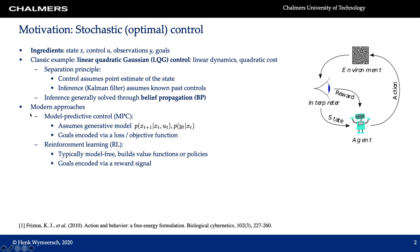In addition to this classic example there exist more modern approaches such as model predictive control and reinforcement learning. In model predictive control we assume to have knowledge of a generative model of the agent dynamics as well as the observation model. The goals are encoded with a loss or objective function, and based on this the model predictive controller solves an optimization problem to determine the current control action. On the other hand, reinforcement learning is typically model-free — it does not have a generative model and it builds value functions or policies. The goals of the agent are encoded via a reward signal.